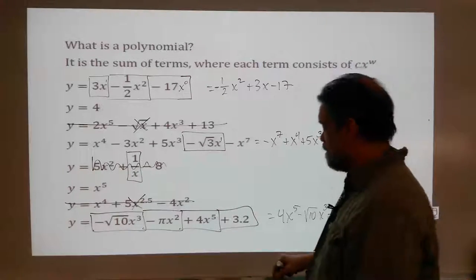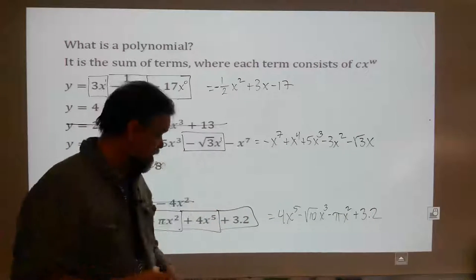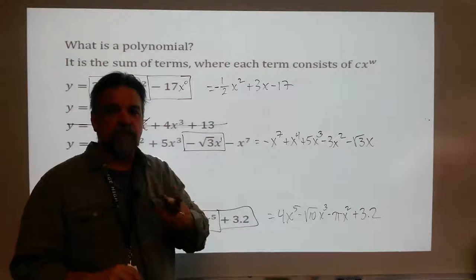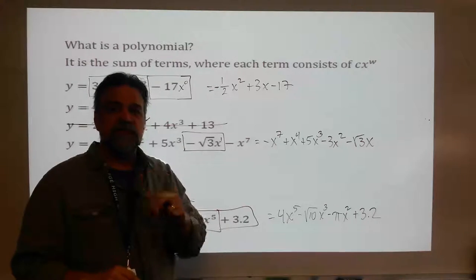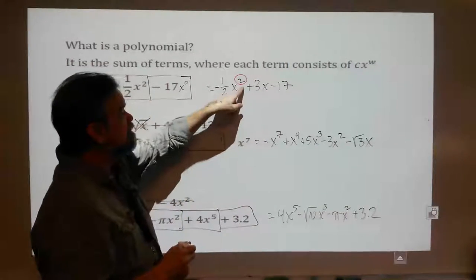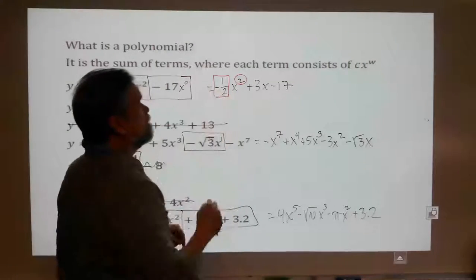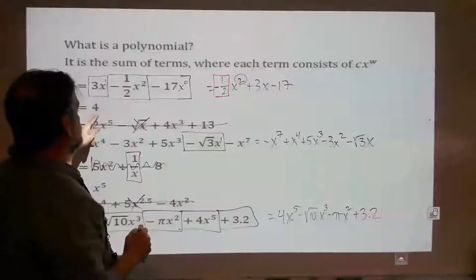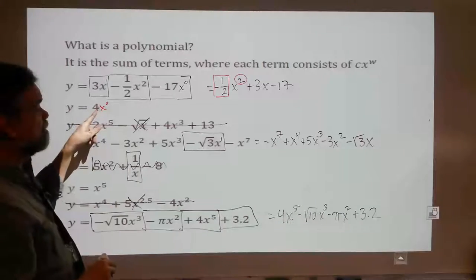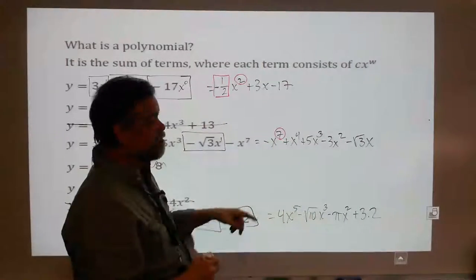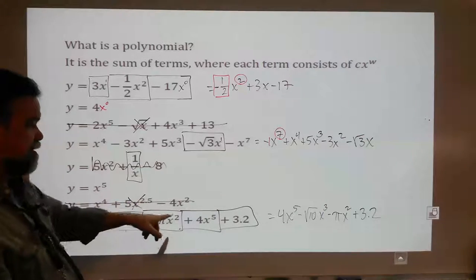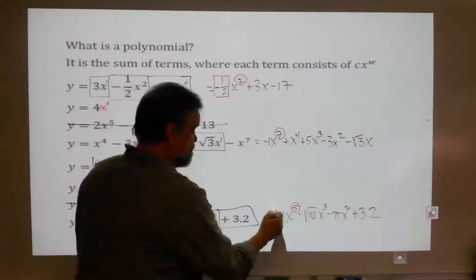One of the reasons I want you to write your polynomials in standard form is because that first term is the most important term. There are two characteristics I want to focus on: the degree of the polynomial and the leading coefficient. The degree of this one — that's your first exponent, your biggest exponent. So the degree of this one is 2, and the leading coefficient is negative one-half. Here, the degree is 0 and the leading coefficient is 4. Here, the degree is 7 and the leading coefficient is negative 1. Here, the degree is 5 and the leading coefficient is 4.